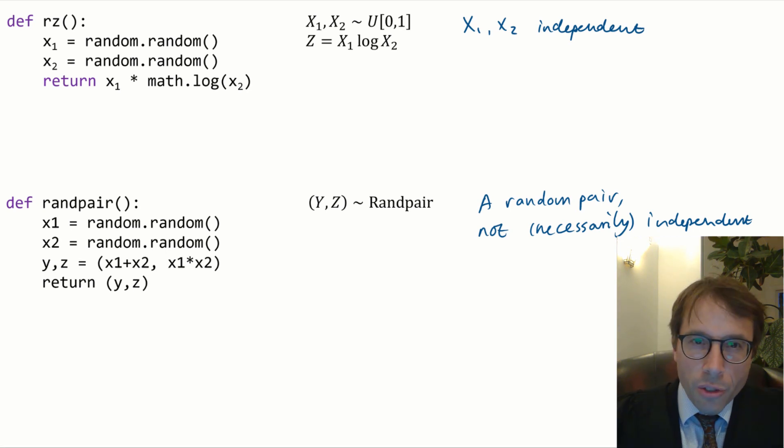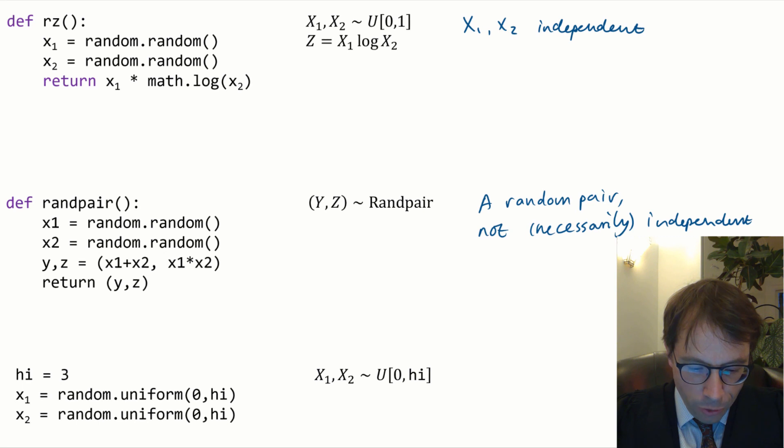Next example, slightly tricky. In this piece of code, x1 and x2 are generated independently. That's clear from the code.